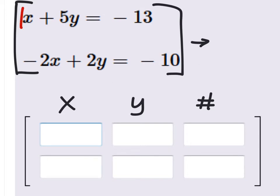Every one of the coefficients stays. So we have an x column, a y column, and then just a number column right here. So in this first equation in this row, the coefficient of x is 1. The coefficient of y is a positive 5.